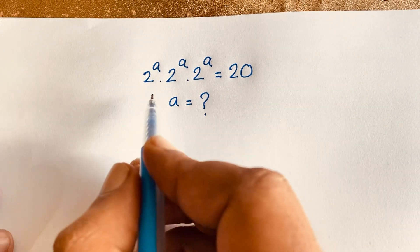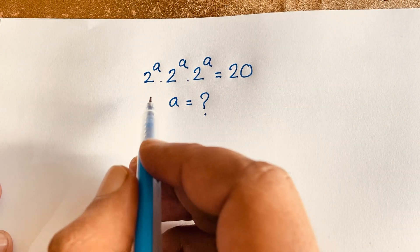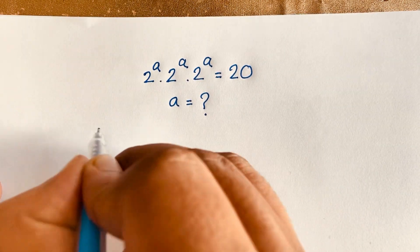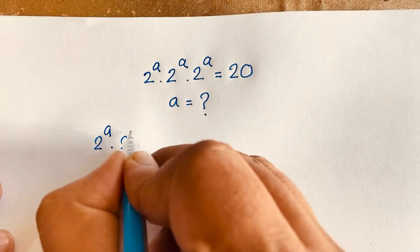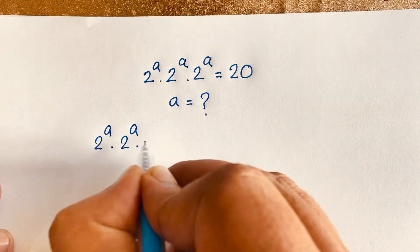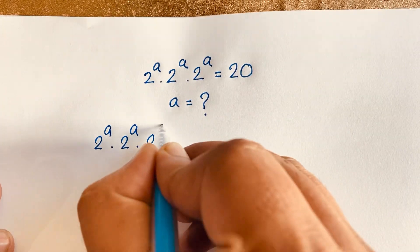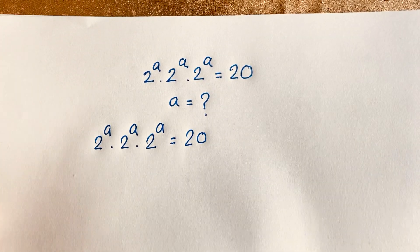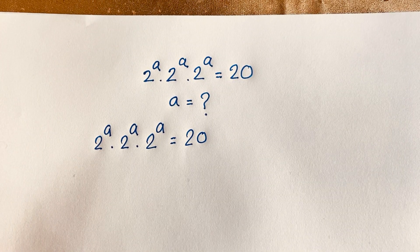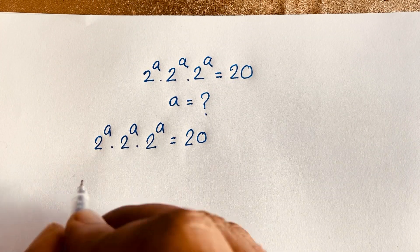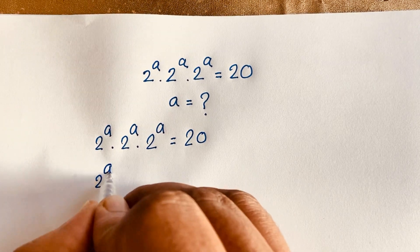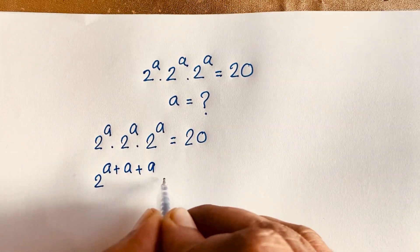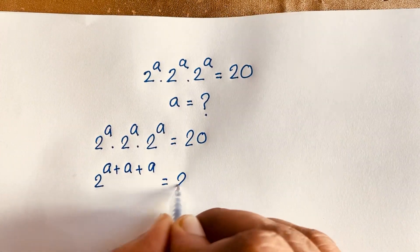So first of all, according to exponential law, our question is 2 to the power A times 2 to the power A times 2 to the power A is equal to 20. According to exponential law, I can see easily here is 2 to the power A plus A plus A is equal to 20.